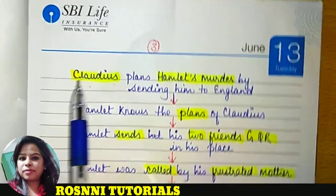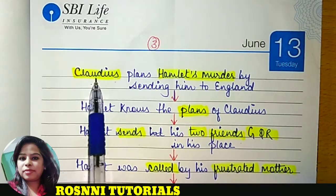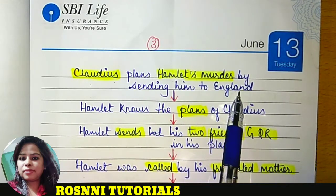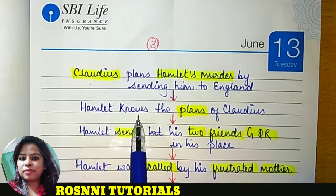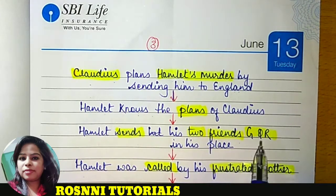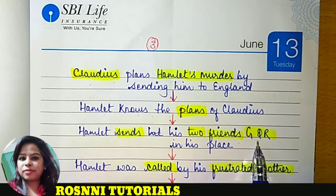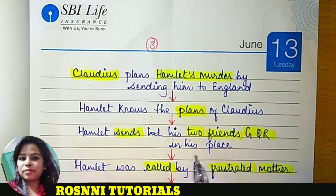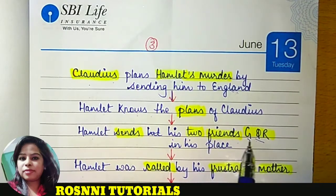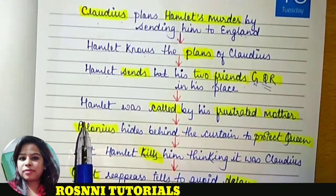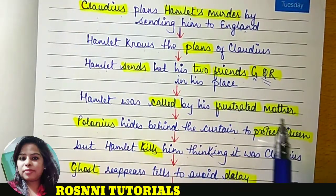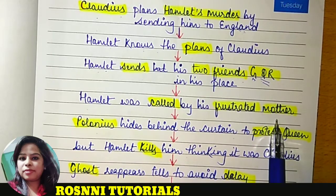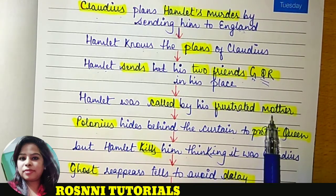Claudius understands that Hamlet is aware of his killing, so Claudius plans Hamlet's murder. He sends Hamlet to England where he was supposed to be killed by his assassins. But Hamlet, with the help of his friends, knew the plan and sent his two friends — Guildenstern and Rosencrantz, who had brought the travelling actors — in his place to England. These two friends die instead of Hamlet. Hamlet returned back to Denmark. His mother was also equally culprit of King Hamlet's murder because it was she who had helped Claudius.